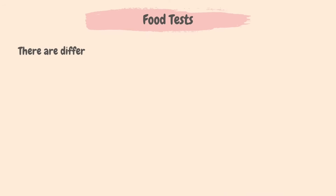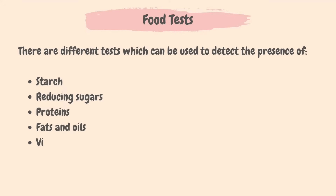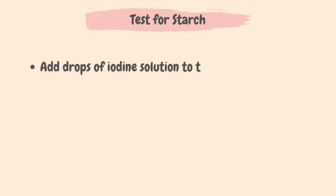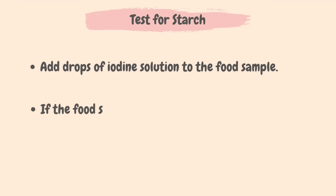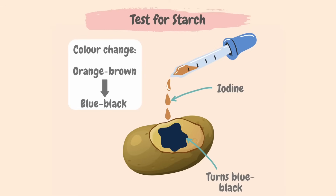Different tests can be performed on food to identify if they contain starch, reducing sugars, proteins, fats and oils, or vitamin C. To test if a food sample contains starch, add drops of iodine solution to the food sample. If starch is present, the color will change from orange-brown to blue-black. A few drops of iodine on a potato, which contains starch, demonstrates this — the iodine turns blue-black.